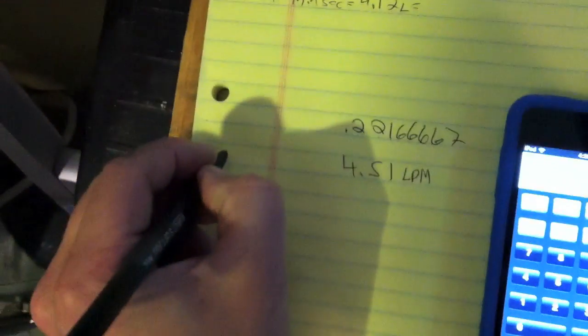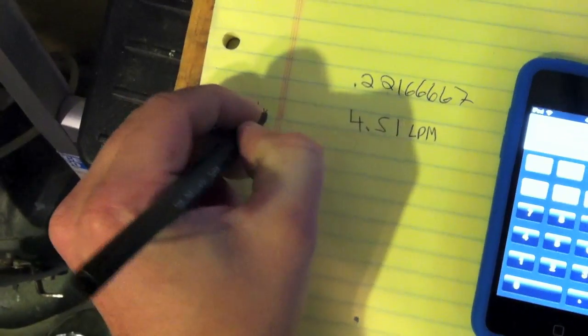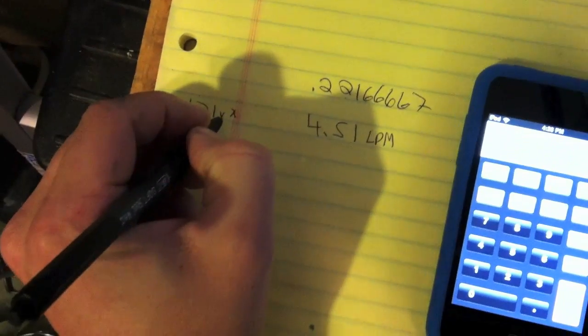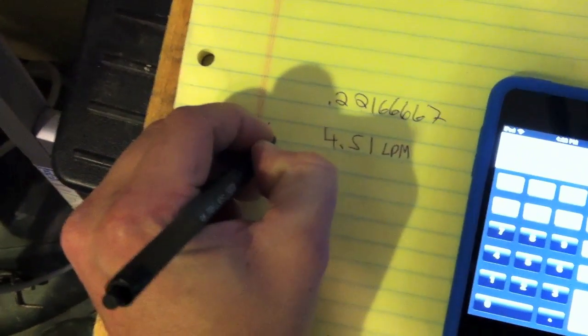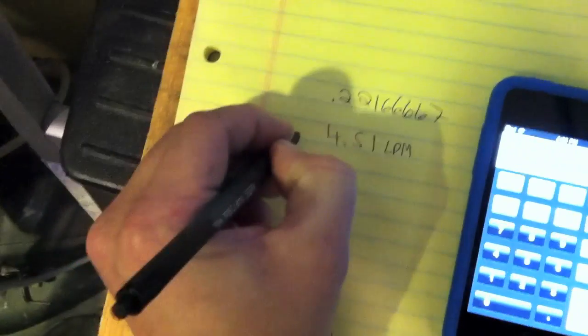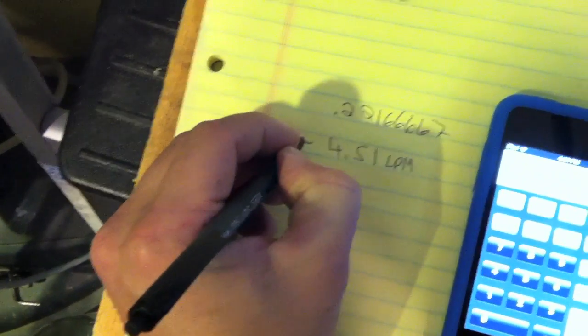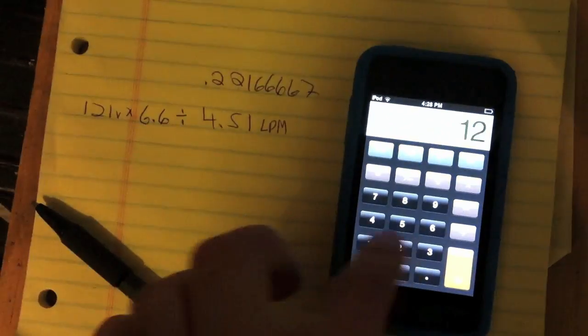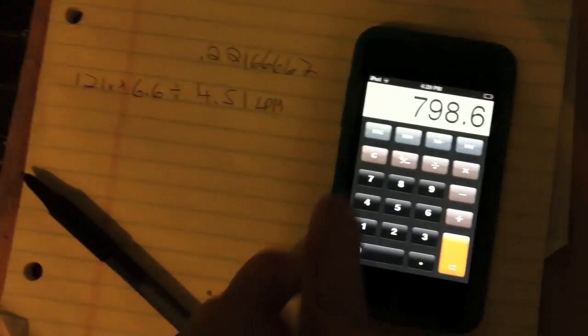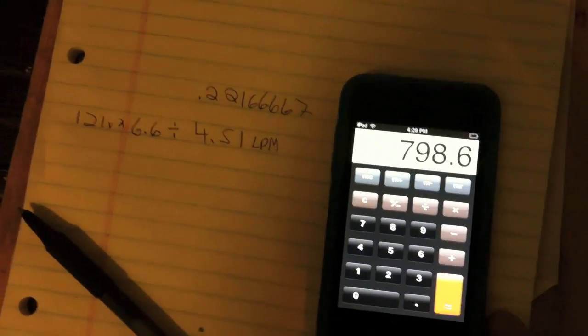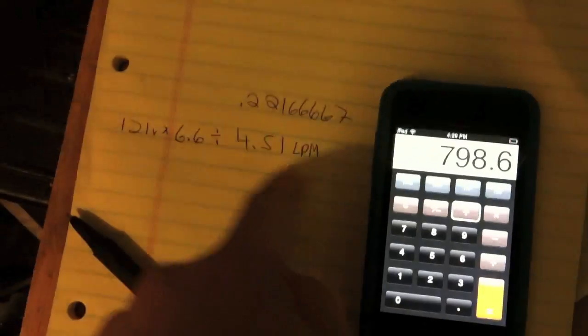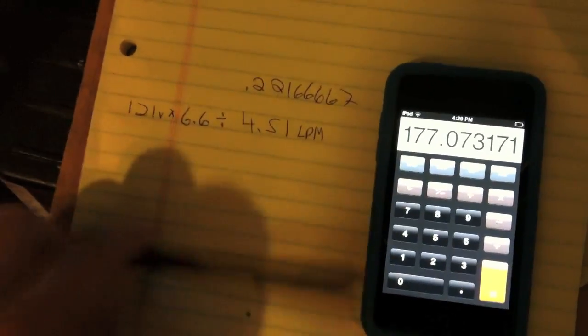We have 121 volts times the 6.6 amps, and then divided by how many liters per minute that is. So 121 volts times 6.6 amps, that's 798 watts. And then we want to know how many watts per liter. So we divide it by .51, equals 177 watts per liter.